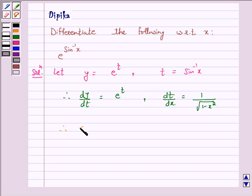Therefore dy by dx equals dy by dt times dt by dx. Now we have dy by dt is e raised to power t, and dt by dx is 1 over the square root of 1 minus x squared.